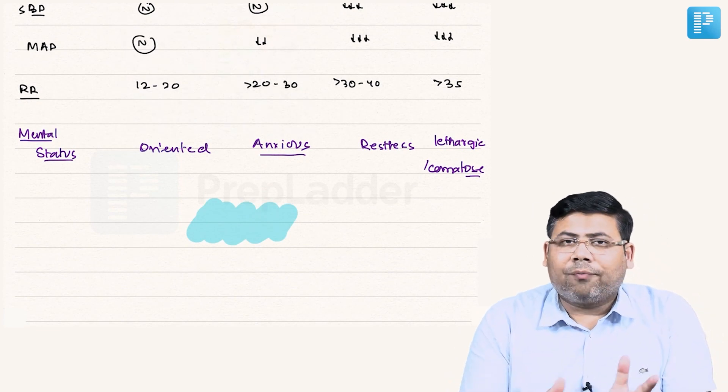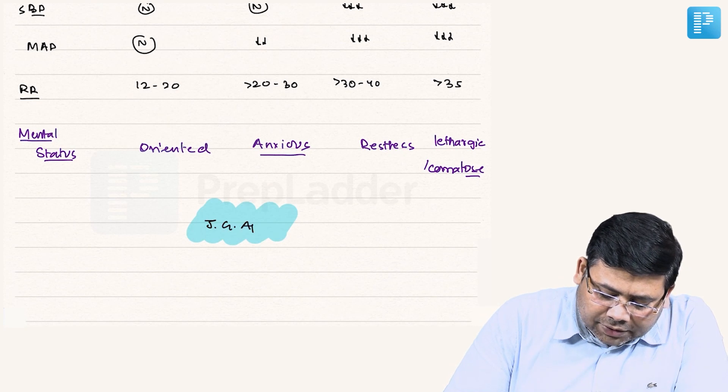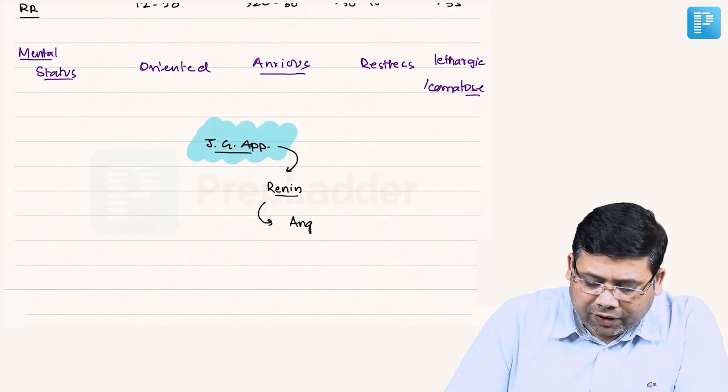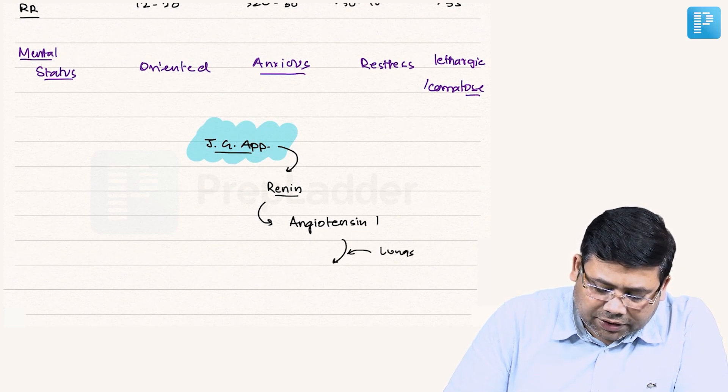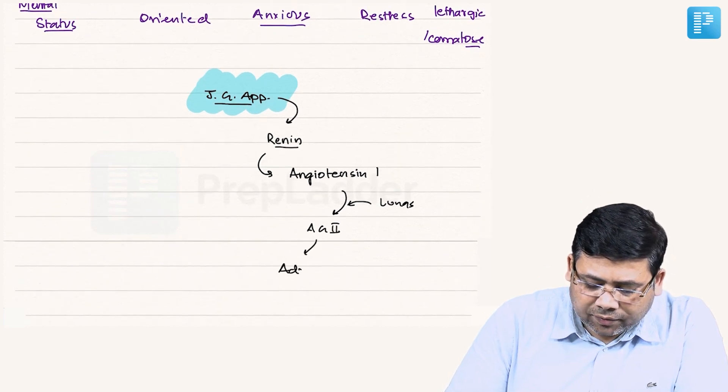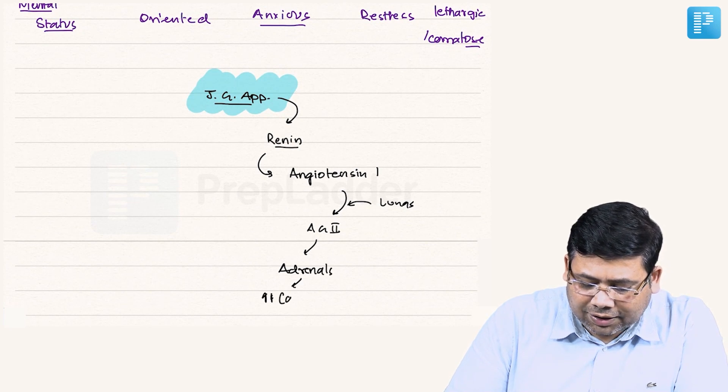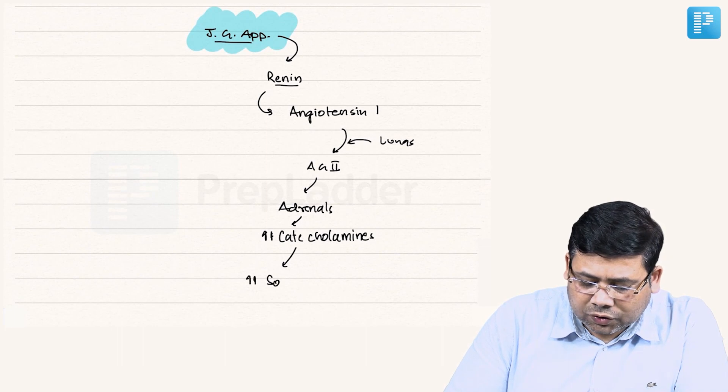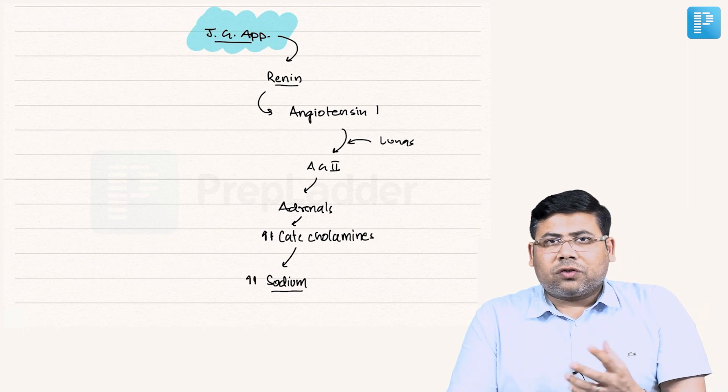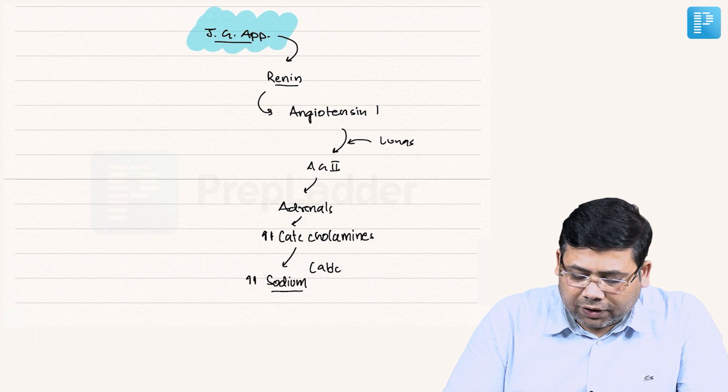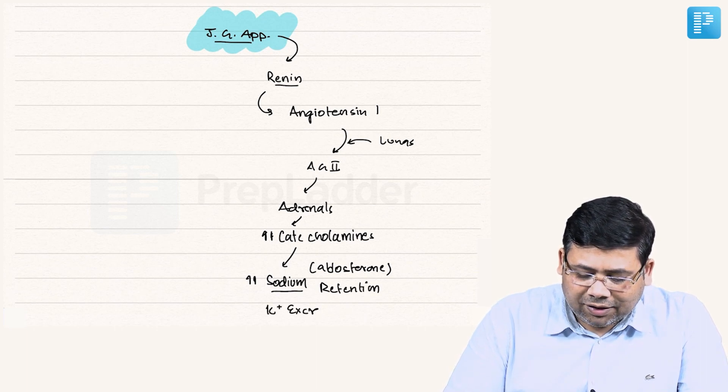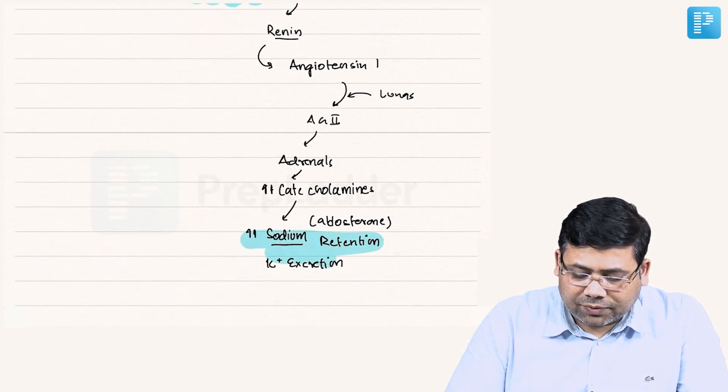The juxtaglomerular apparatus will release renin. Renin in turn will result in release of angiotensin, and angiotensin 1 will be converted in the lungs to angiotensin 2. Angiotensin 2 will stimulate the adrenal to increase the catecholamines. And if there is increase in catecholamines, what is going to happen? There will be increased sodium absorption under the influence of aldosterone. So there is increased sodium retention in exchange of potassium - K+ excretion and sodium retention. Point number one which has been asked in the MCQ.